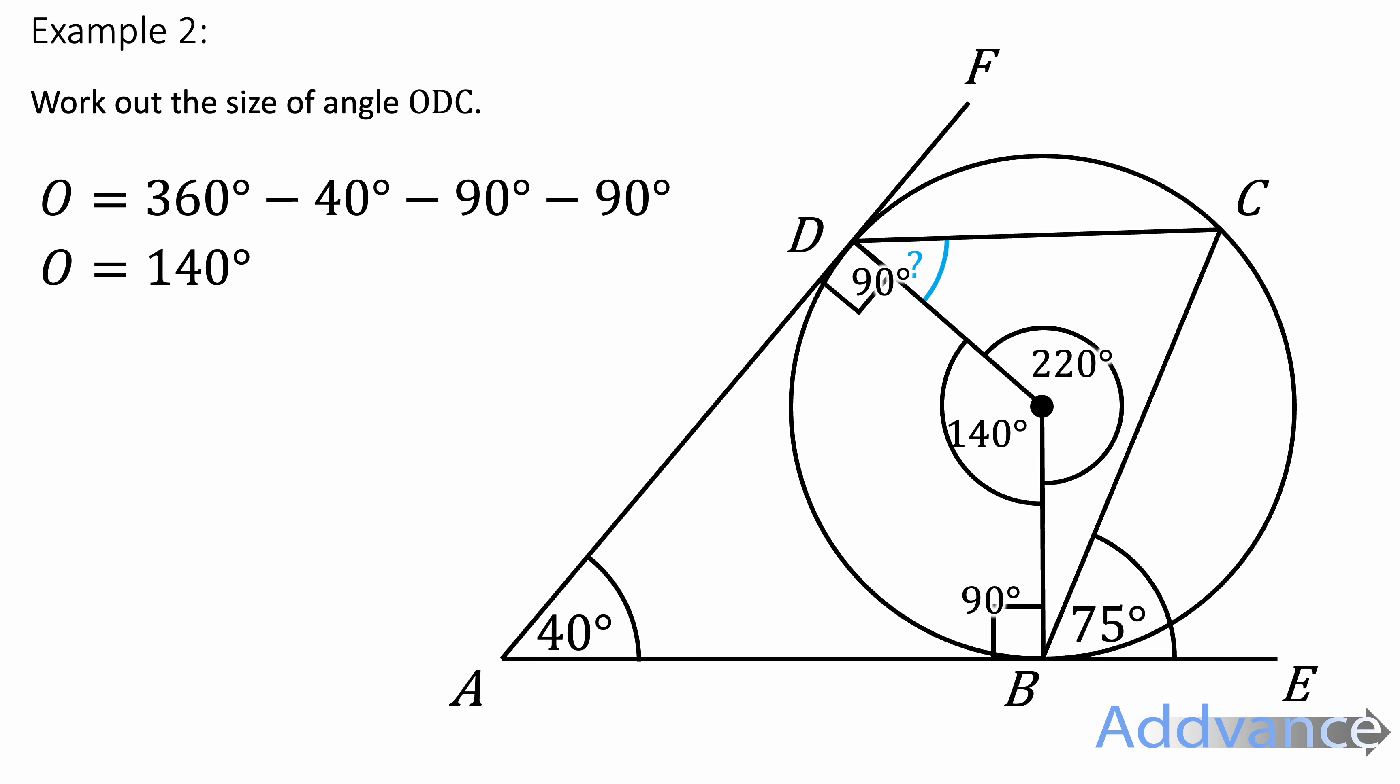I can also see an arrowhead here. And so the angle at the outside is going to be half the angle at the inside. I half 140 and I get 70 degrees. The angle at the outside is half the angle at the centre.